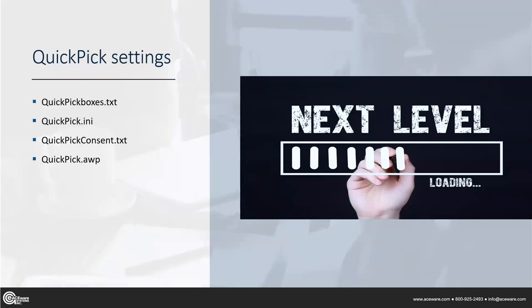Now let's talk about our Quick Pick settings. There are a lot of files, a lot of things we need to know. Some of them, once you've set them up once, you don't really need to do much more with them. Others we are constantly making changes to. The most important one that really configures your layout — what requirements are going to be there, multiple fees — is your Quick Pick Boxes dot text. We're also going to look at the INI. And then of course your main template.